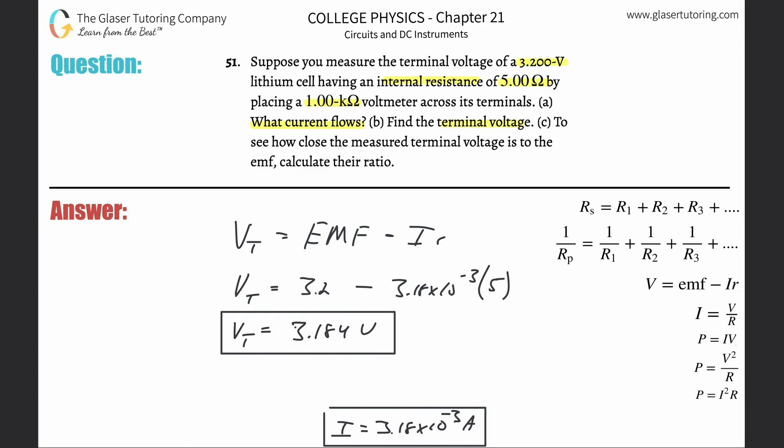Then letter C is to calculate the ratio. So the terminal voltage was 3.184. The total battery EMF was 3.2. So we're going to see what the ratio is. Use that exact value 3.184079602, divide that by 3.2. And we're going to get a ratio of about 0.995. So as you can see, even with a 5 ohm internal resistance, the battery's terminal voltage is 99.5% of the total EMF that's supplied.